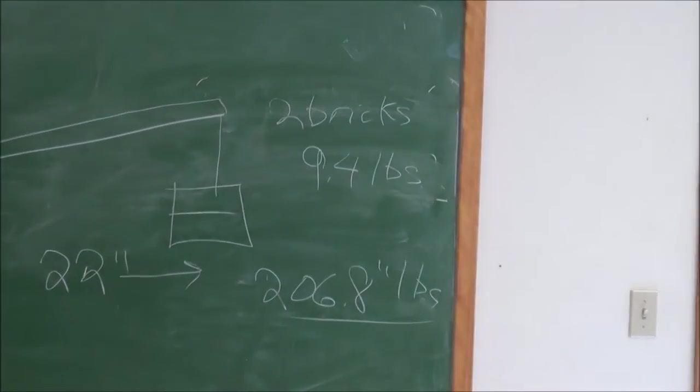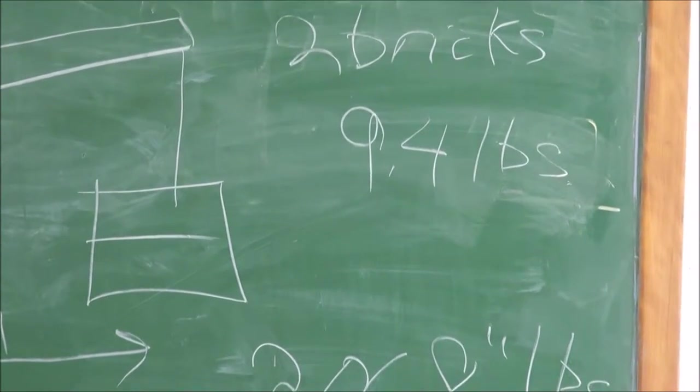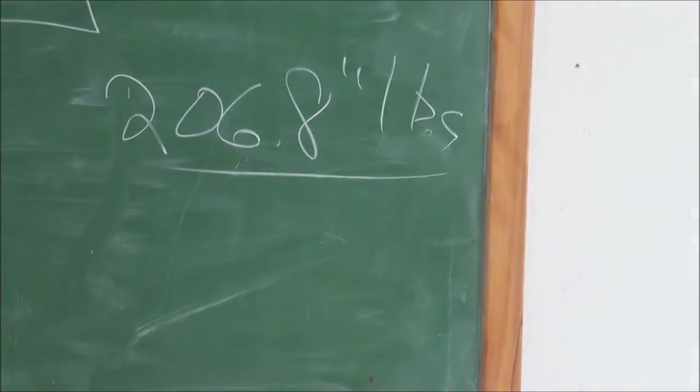The distance is 22 inches, and we still have the same two bricks, which is 9.4 pounds. Weight times distance, so we multiply and we get 206.8 inch pounds.